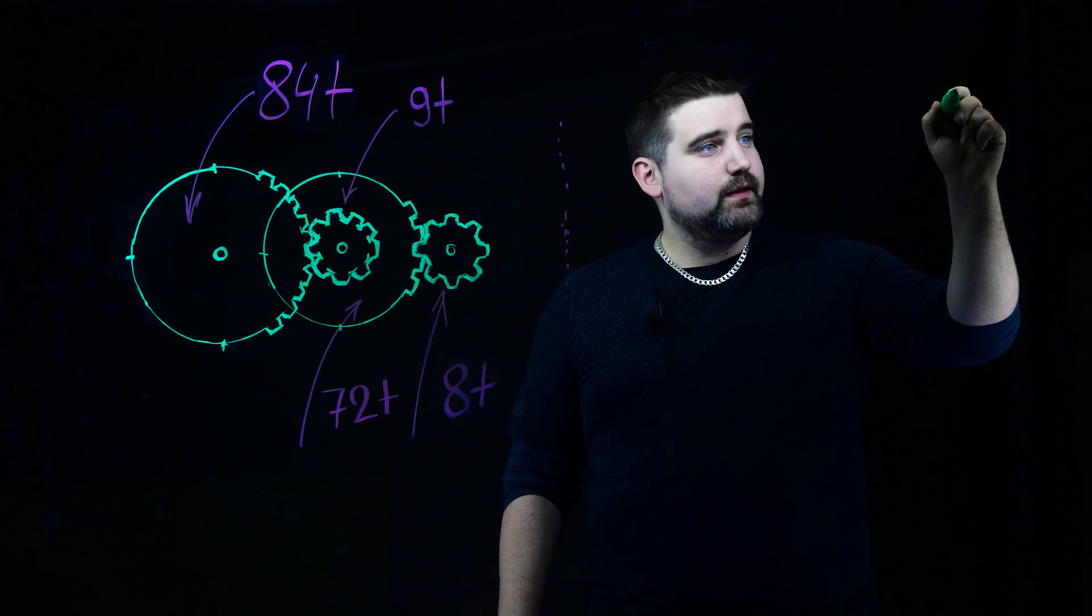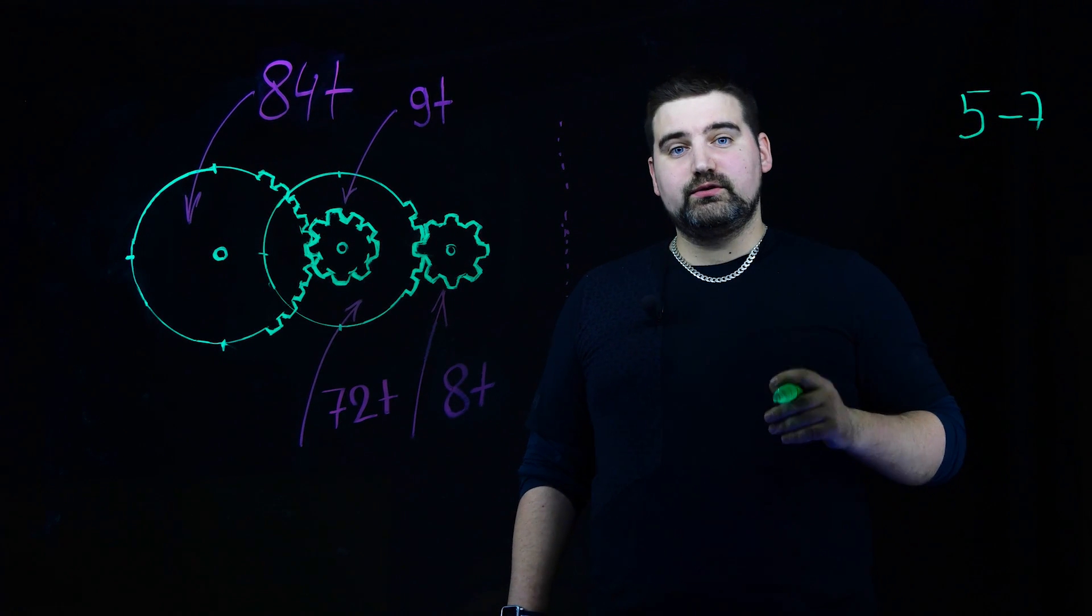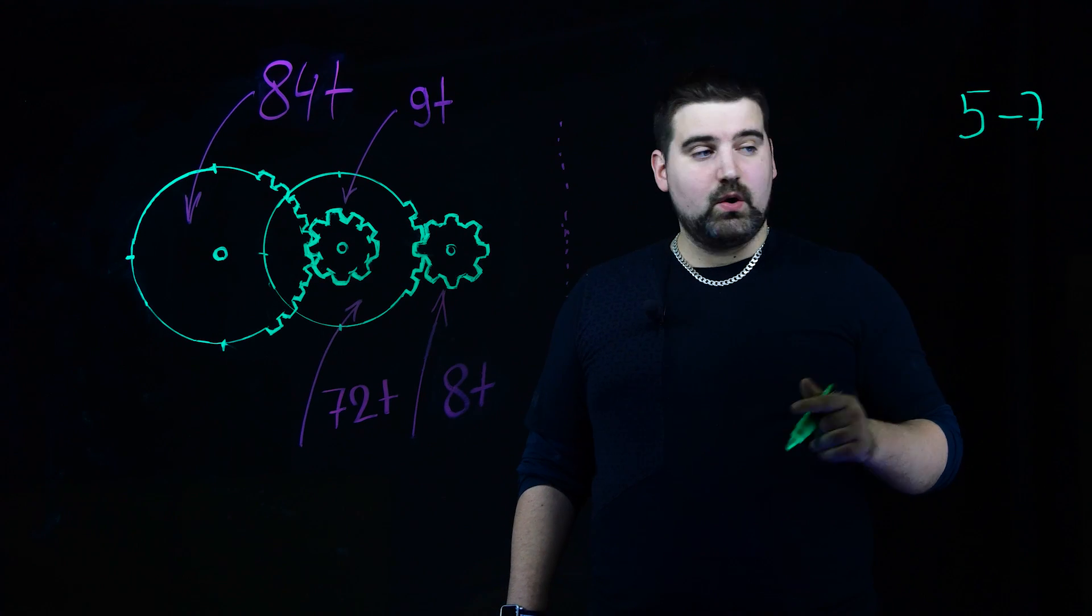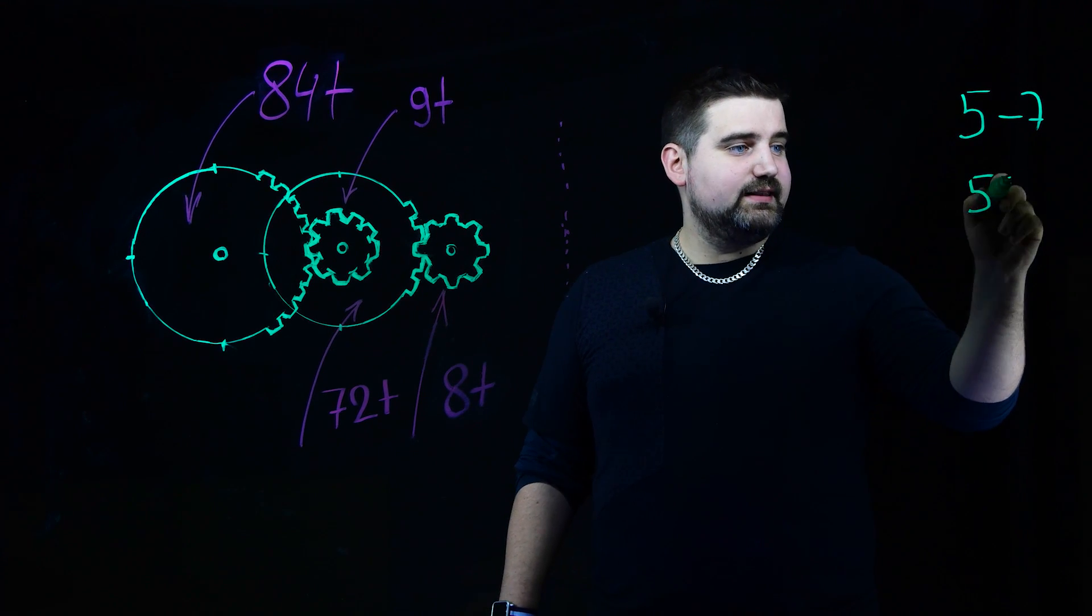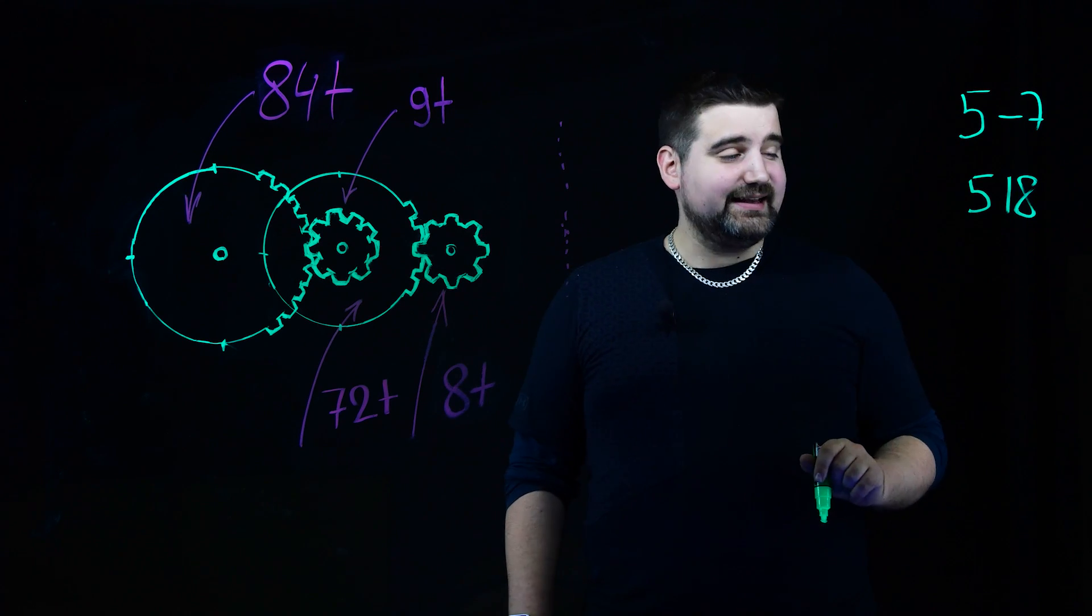In order for my bird to flap 5 to 7 times per second, I need to reduce the motor RPM ratio which is 518 RPM. So I need to make it about 100 times less.